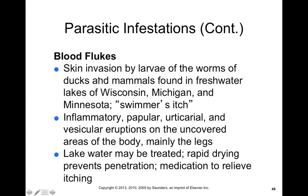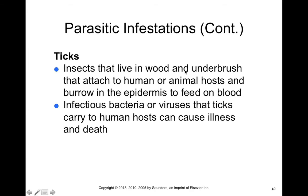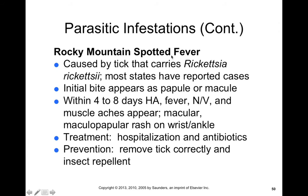Ticks are also considered a parasitic infection — you find these living in wooded and underbrush regions. They are attracted to some of the molecules we release in our skin secretions, and they carry infectious bacteria or viruses that can cause a variety of illness, like Rocky Mountain spotted fever or Lyme disease. Rocky Mountain spotted fever is transmitted by ticks and caused by Rickettsia rickettsii. Most states have reported cases — it's a misnomer to call it Rocky Mountain spotted fever because it occurs in more than just the Rocky Mountains. The initial bite appears as a papule or macule, and within four to eight days you get headache, fever, nausea, and vomiting. Maculopapular rashes can appear. It's treated with hospitalization and antibiotics, and prevented by removing a tick correctly.